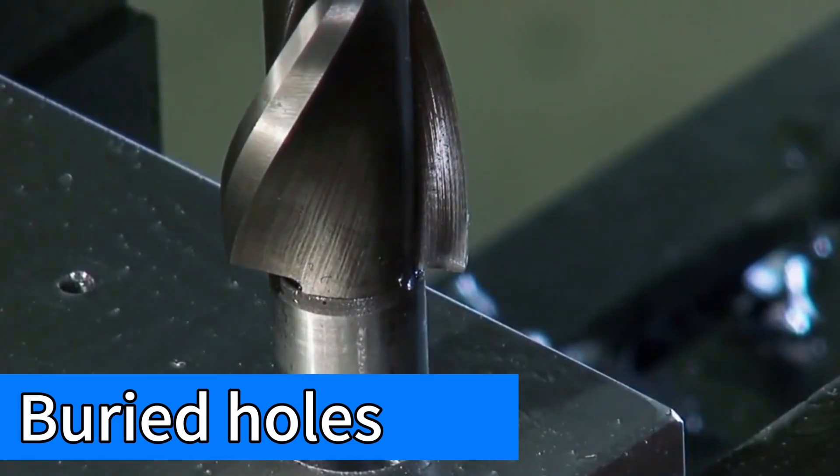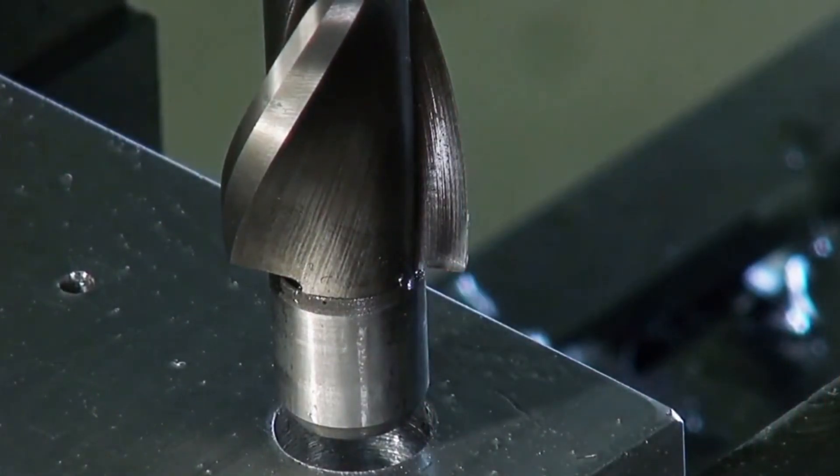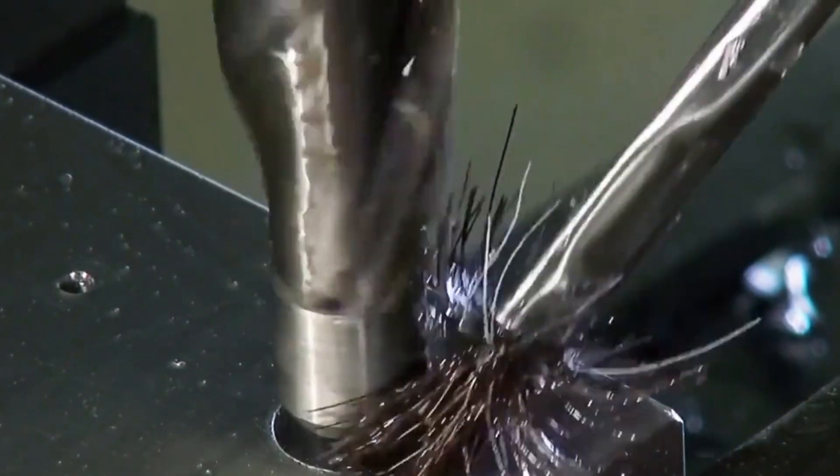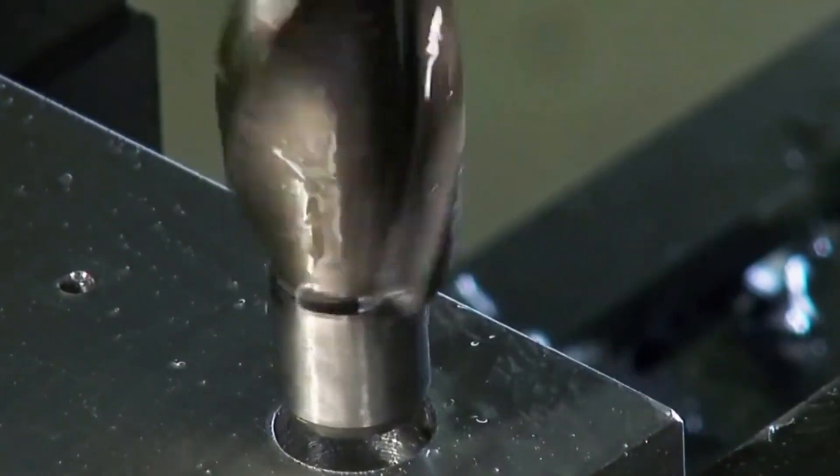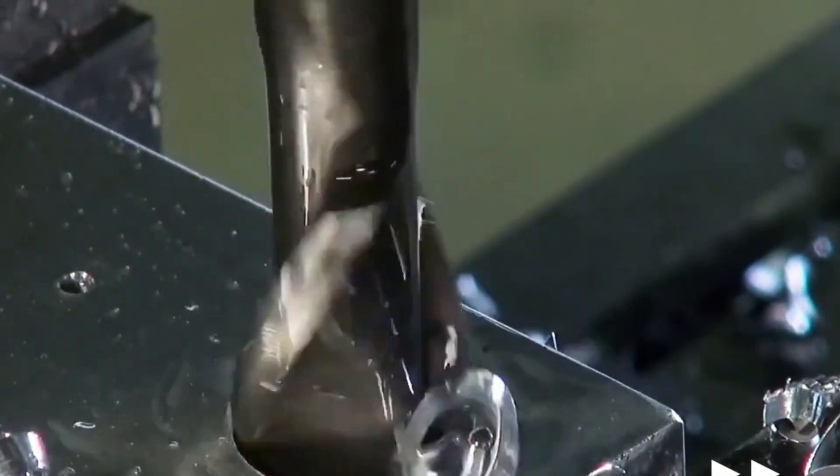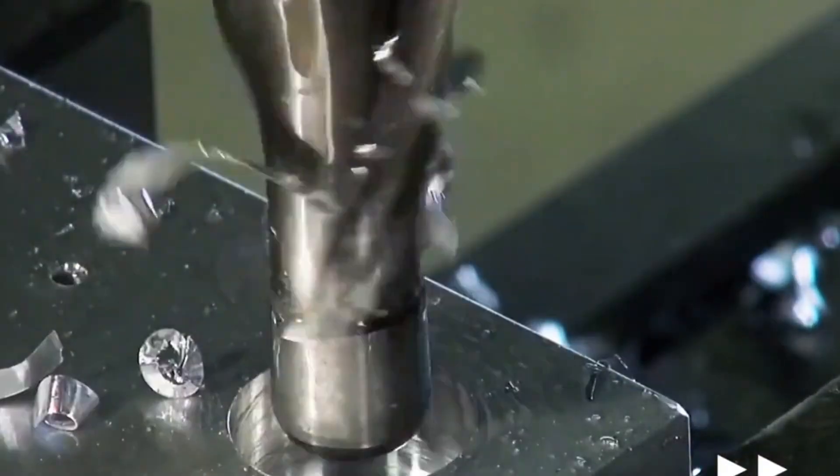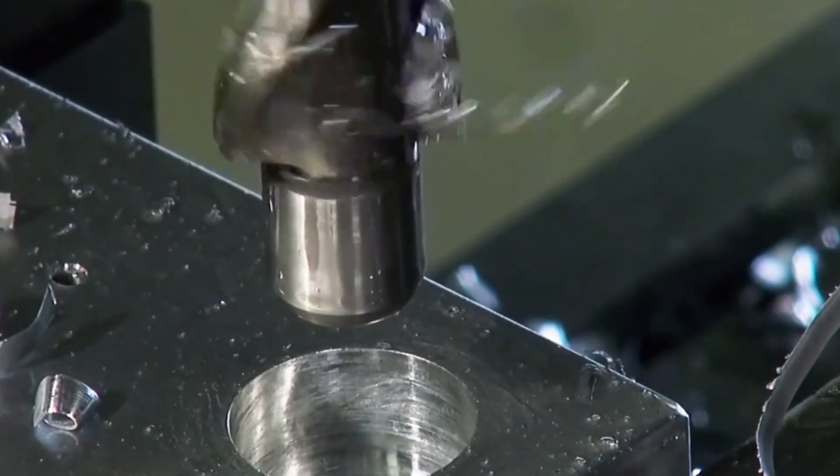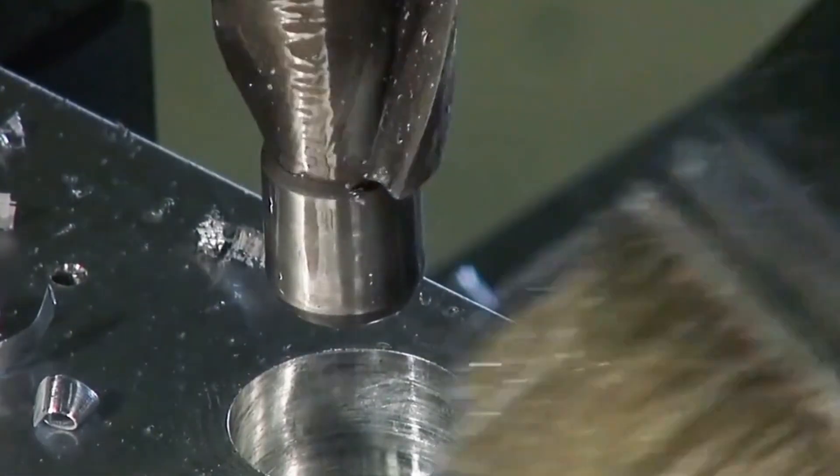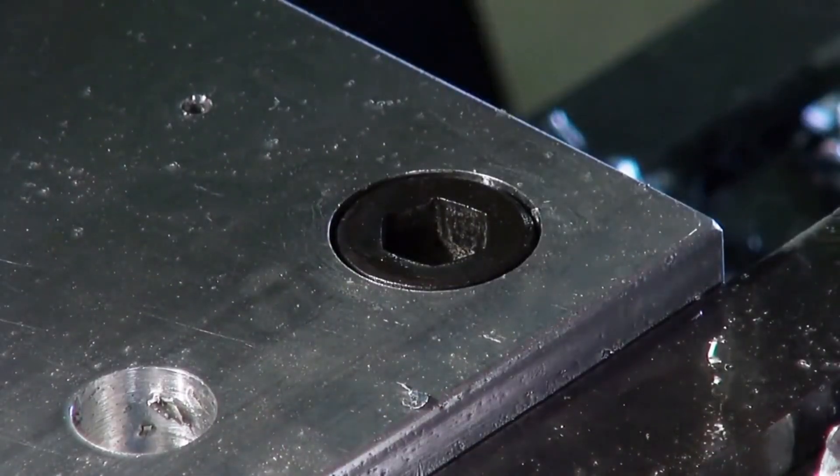Buried hole machining needs to be based on drilling, through the end milling cutter milling out into a hole. The purpose of the buried hole is to make the bolt head buried inside the part, without exceeding the part, without affecting the appearance and without affecting the external structure.